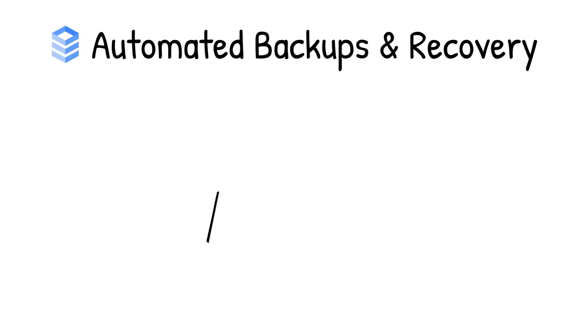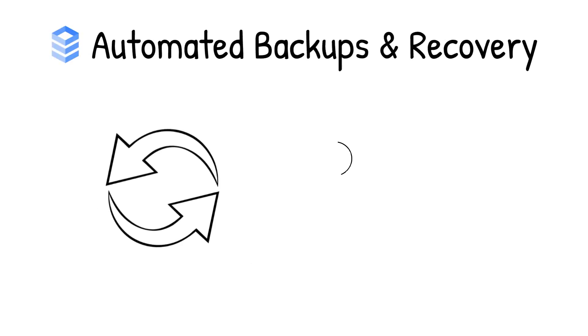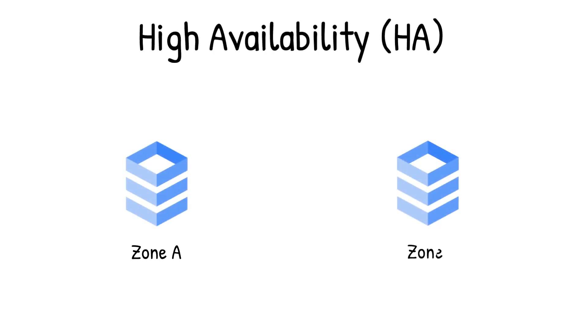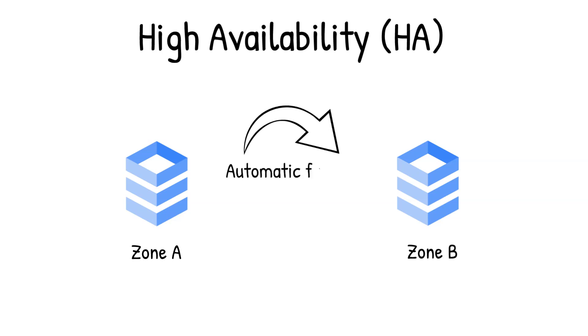Cloud SQL also offers automated backups and recovery options. You can set time slots and locations for backups. For production applications, it is recommended to enable high availability, or HA. By enabling this feature, the database instance will automatically fail over to another zone in your selected region in case of an outage.